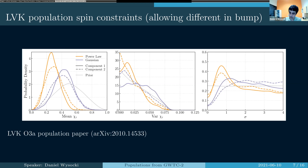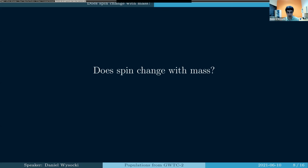Those were all LVK results from published papers by the collaboration. For the rest of the presentation, I'm going to take LIGO's data and run my own analyses. I have a link at the end if you're interested in reproducing it, because all of the code and data is openly available. You can reproduce this yourself if you're interested in getting into population analysis work.